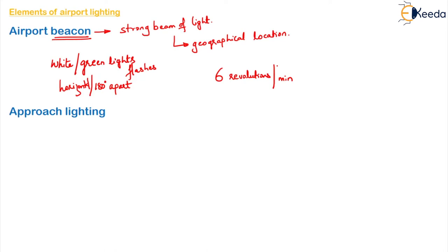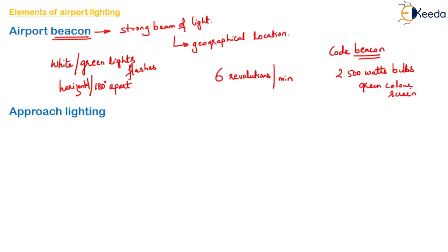If the observation is not clear, a separate tower may be provided for the installation of these rotating beacons. The term code beacon is used to indicate a light provided sufficiently high to clear all obstructions. It consists of two 500-volt light bulbs with a green color screen. This beacon will continuously flash a Morse code signal designating the airport.